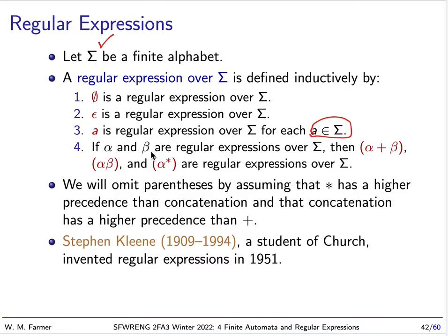And if alpha and beta are regular expressions, then alpha plus beta is a regular expression, and alpha beta is a regular expression, and alpha star is a regular expression. We sometimes need parentheses around these, but we will drop them by assuming that star has higher precedence than concatenation, and that concatenation has higher precedence than plus.